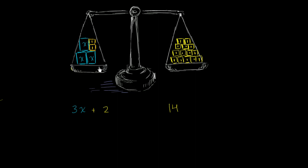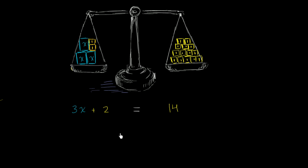We see that the scale is balanced — it's not tilting down or upwards. So this total mass on the left must be equal to the total mass on the right. The scale is balanced, so we can write an equal sign.